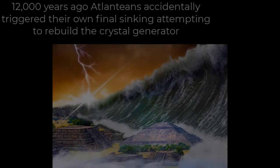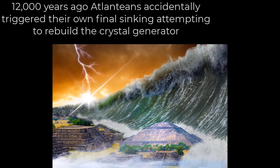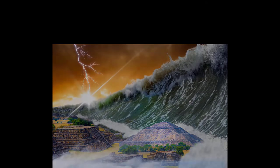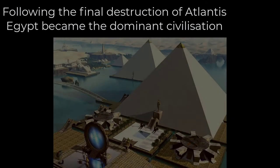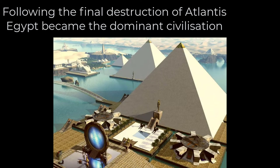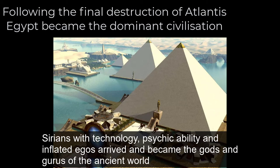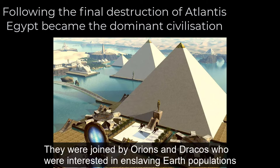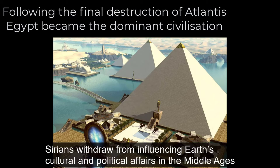12,000 years ago, Atlanteans accidentally triggered their own final sinking attempting to rebuild the crystal generator. Following the final destruction of Atlantis, Egypt became the dominant civilization. Sirians with technology, psychic ability and inflated egos arrived and became the gods and gurus of the ancient world. They were joined by Orions and Dracos, who were interested in enslaving Earth populations. Sirians withdrew from influencing Earth's cultural and political affairs in the Middle Ages.